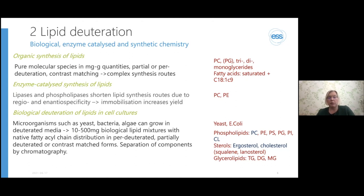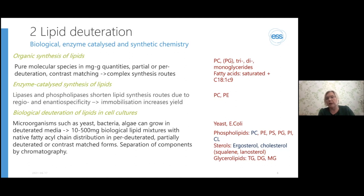Biological deuteration of lipids can be done in cell cultures, because several types of microorganisms grow in deuterated media. It's important that this is minimal media, so that you don't have to add deuterated amino acids into the growth medium. In this way you can produce something like 10 to 500 milligrams of biological lipid mixtures quite routinely, with the native fatty acyl chain distribution and all the different lipid classes present in the cell culture. They can be made completely deuterated, partially deuterated, or even in contrast-matched forms. This comes with the necessity of purification and separation by chromatography. Primarily yeast and E. coli bacterial cultures have been used to produce phospholipid extracts.